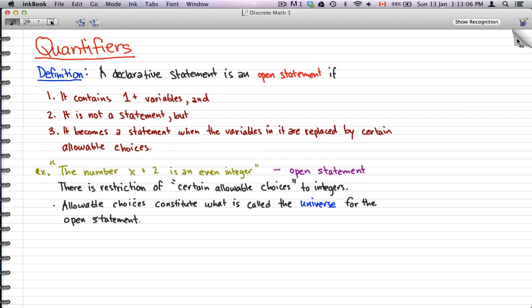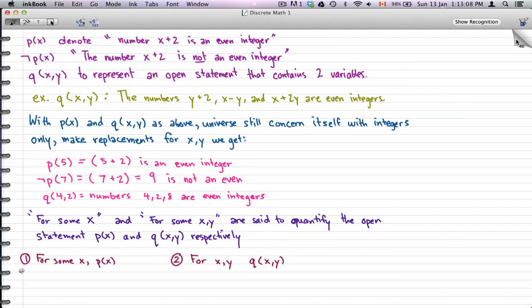Okay, so moving on. Let's see, just make sure we covered everything. Moving on, we have these three statements or open statements: p(x) denotes 'the number X plus 2 is an even integer.' Negated p(x) represents 'the number X plus 2 is not an even integer.' And q(x,y) would represent an open statement that contains two variables.